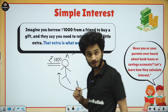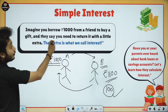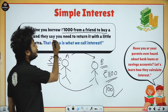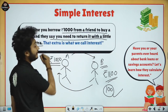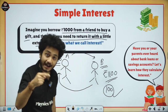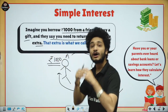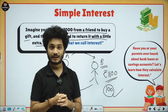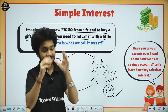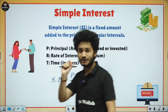That's how interest works. Imagine you borrow 1000 from a friend to buy a gift and they say you need to return it with a little extra — that little extra 100 rupees is interest. Whenever you borrow money from someone and return it, you need to give them a little extra — that little extra is interest.